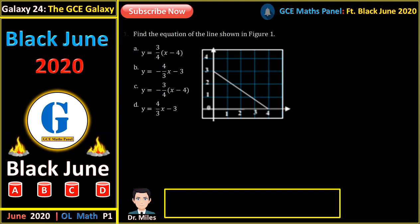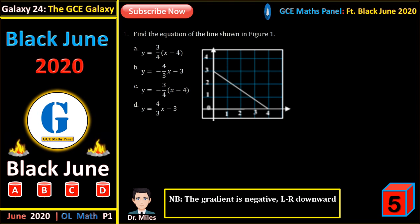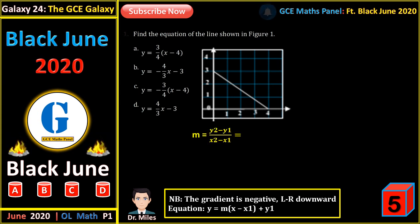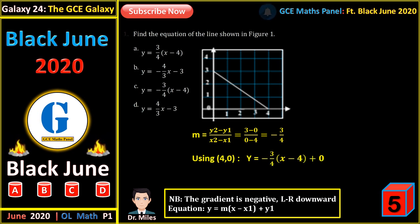Find the equation of the line shown in figure 1. The gradient of this line is negative because we are moving from left to right downwards. The equation of the line is given by Y equals M into (X minus X1) plus Y1, where M is the gradient and X1, Y1 is a point through which the line passes. The gradient is change in Y over change in X, giving us minus 3 on 4. Using the point (4, 0), that equation corresponds to alternative C.